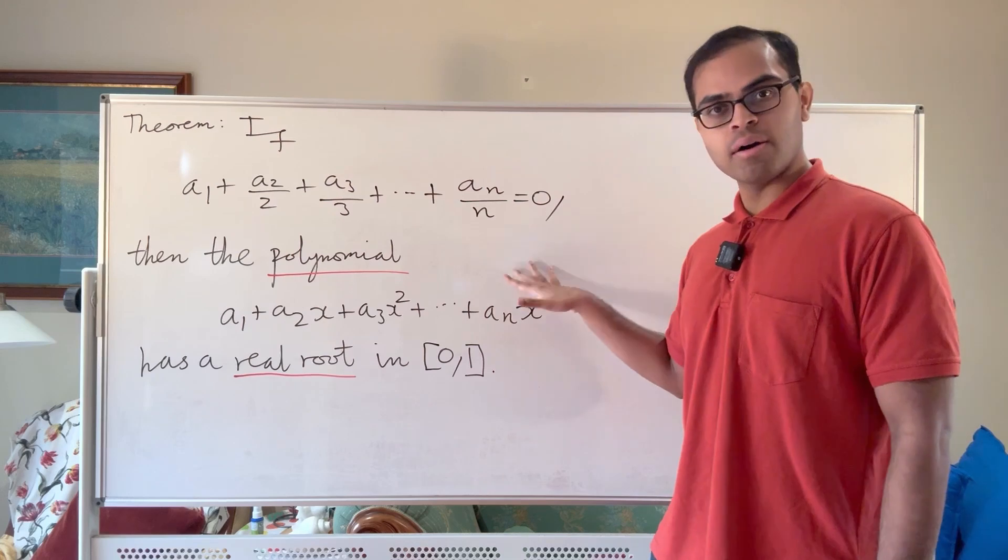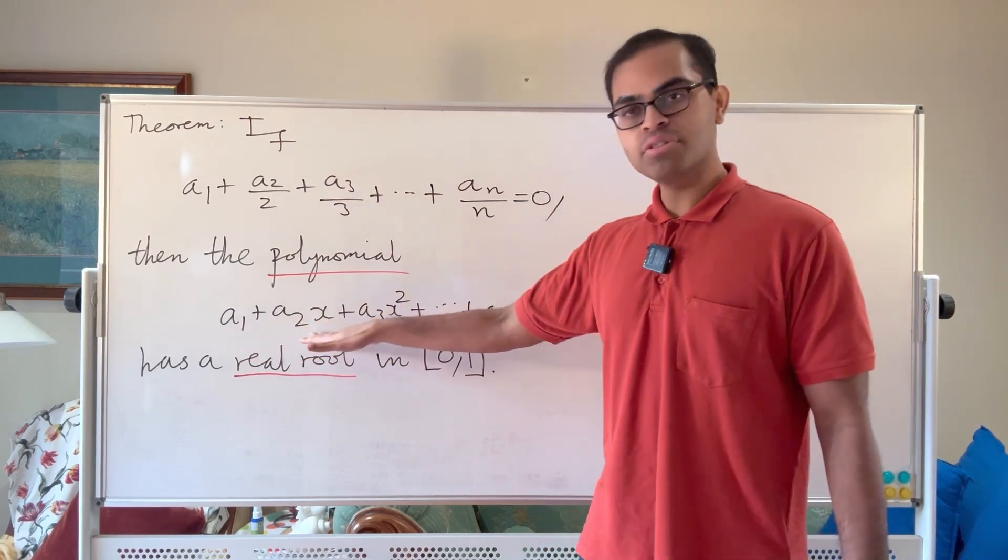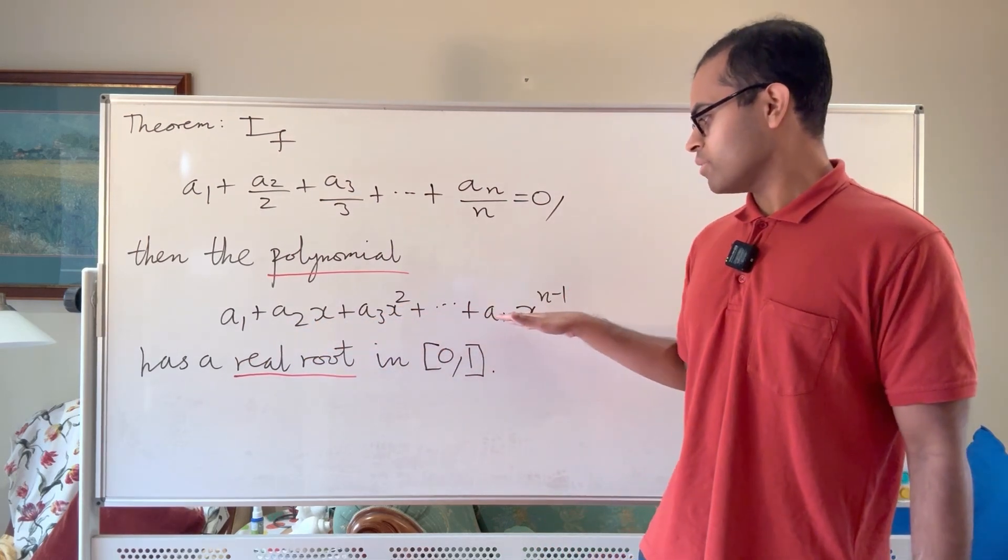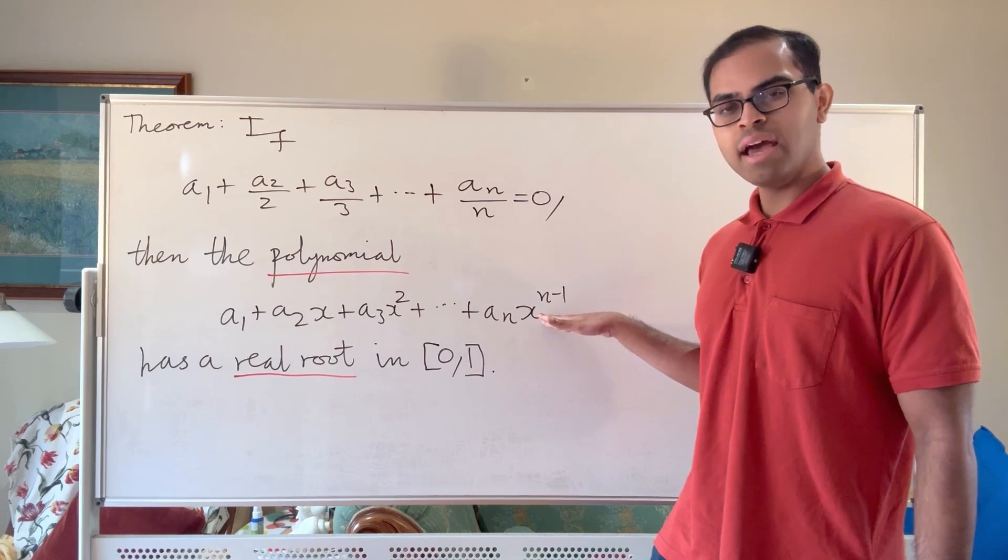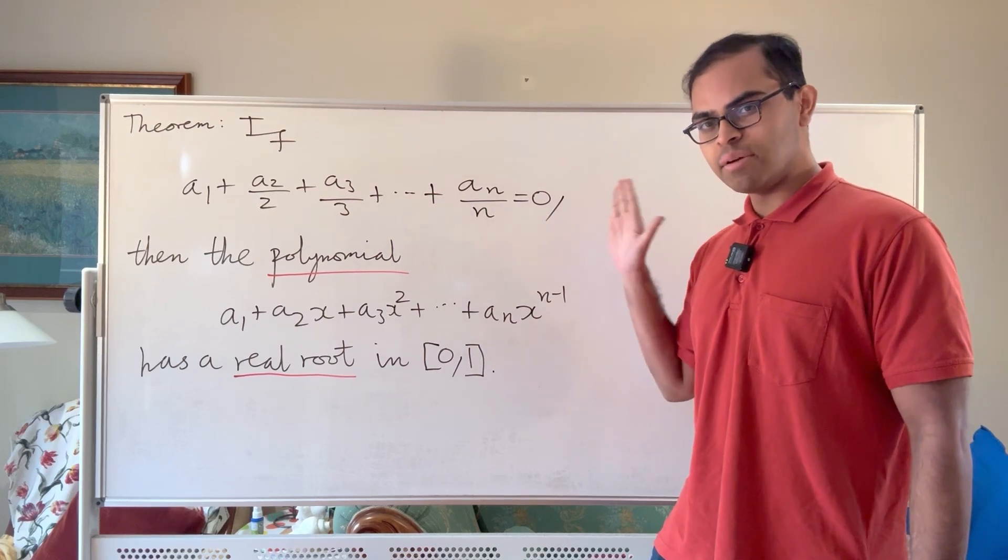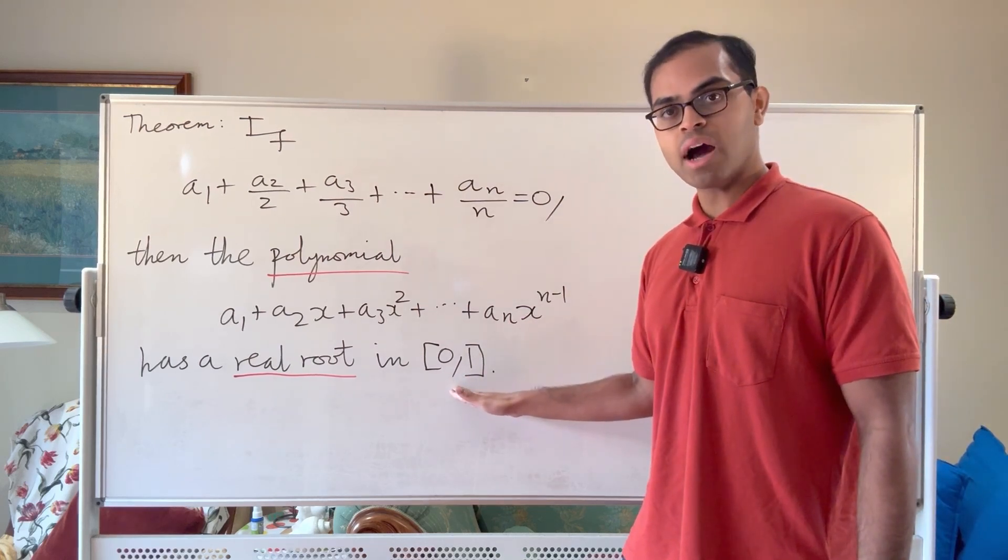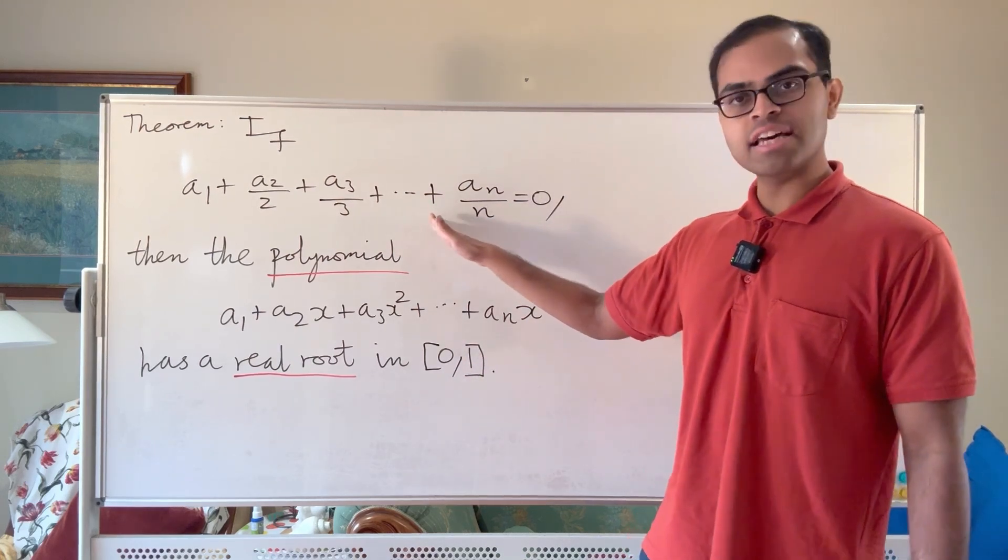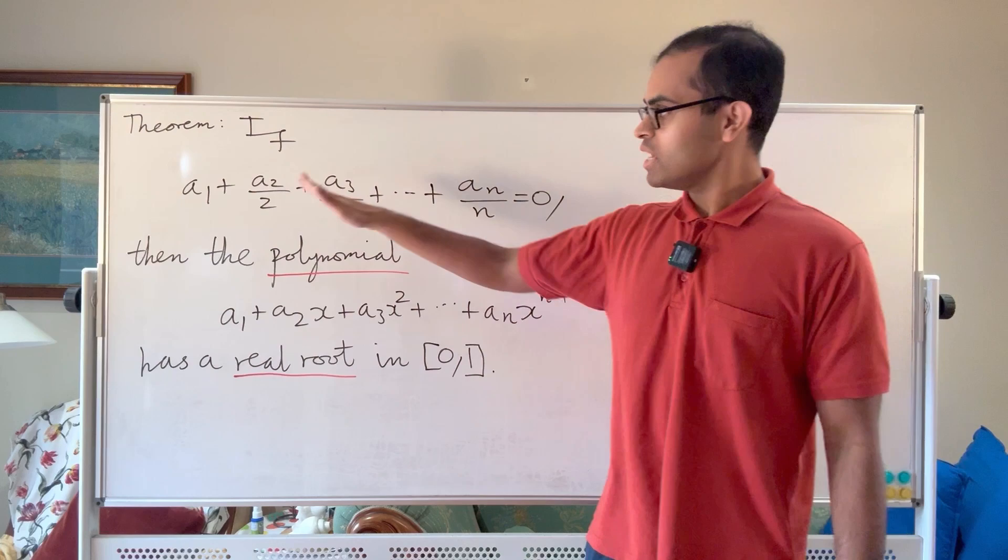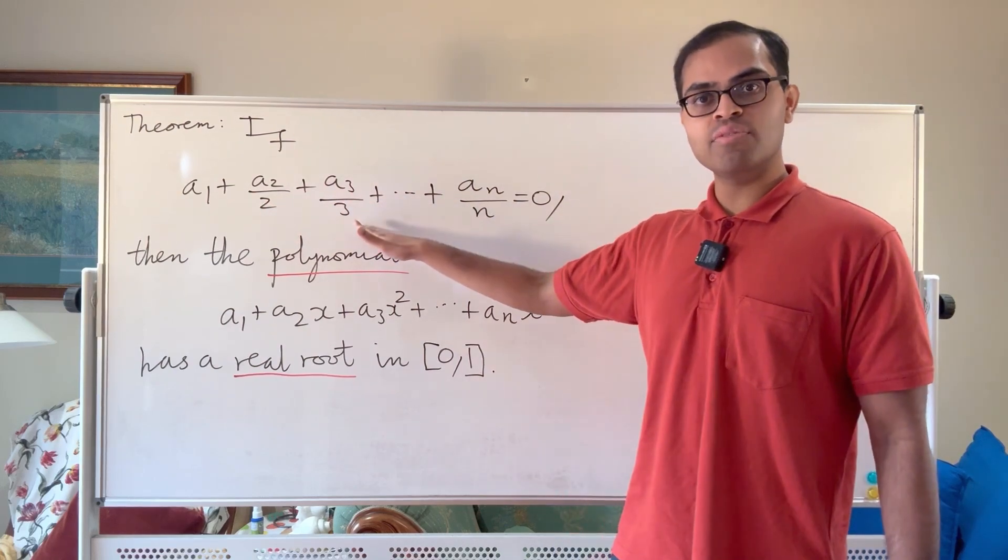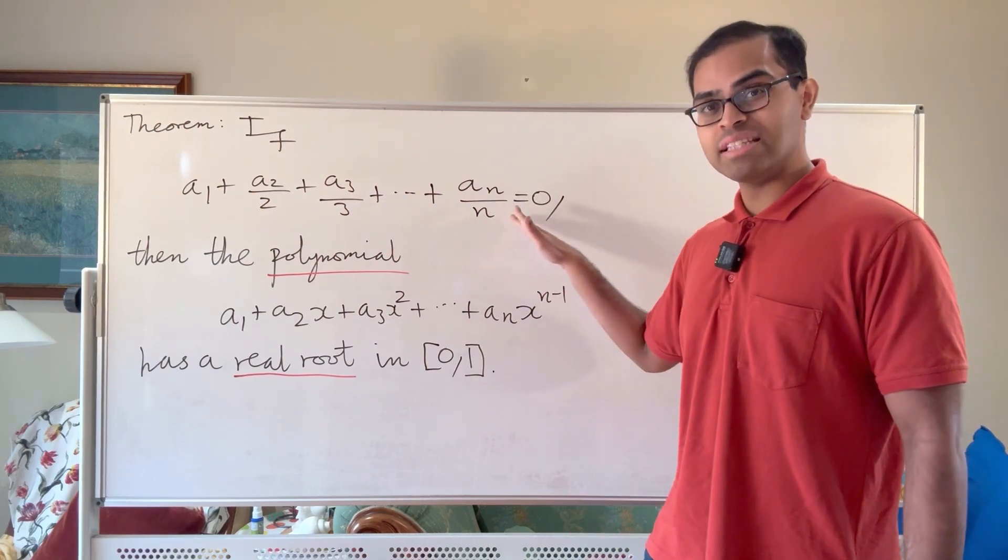So here we have this polynomial which is a1 plus a2x plus a3x squared all the way up to anx to the n minus 1. This theorem is telling us that this polynomial has a solution in the closed interval [0,1] assuming this condition is satisfied on its coefficients: that a1 plus a2 over 2 plus a3 over 3 all the way up to an over n is equal to 0.